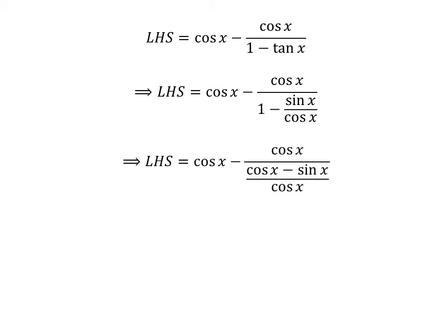Simplification of 1 minus sine of x upon cosine of x gives us the left hand side of the identity equal to cosine of x minus sine of x upon cosine of x.